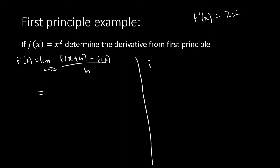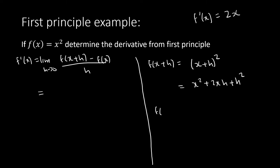Start with f(x+h). Where there is x, replace it with x+h, so it becomes (x+h)². Expanding the bracket gives x² + 2xh + h². The next step is to subtract f(x): (x² + 2xh + h²) minus x². The x² and x² cancel, leaving 2xh + h².